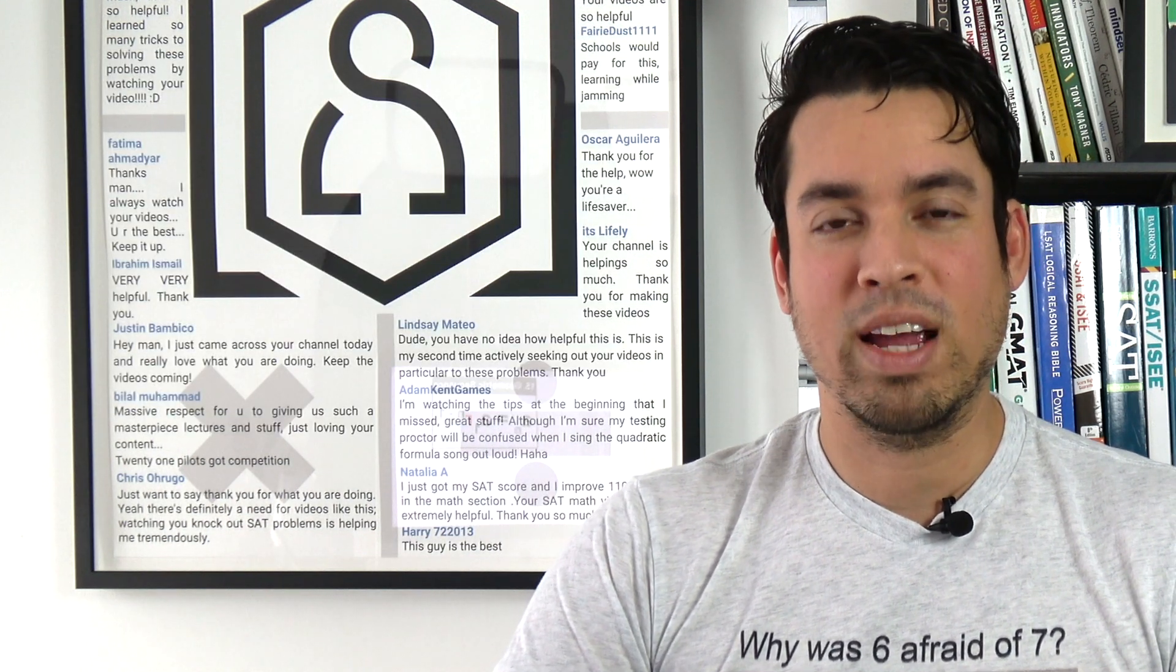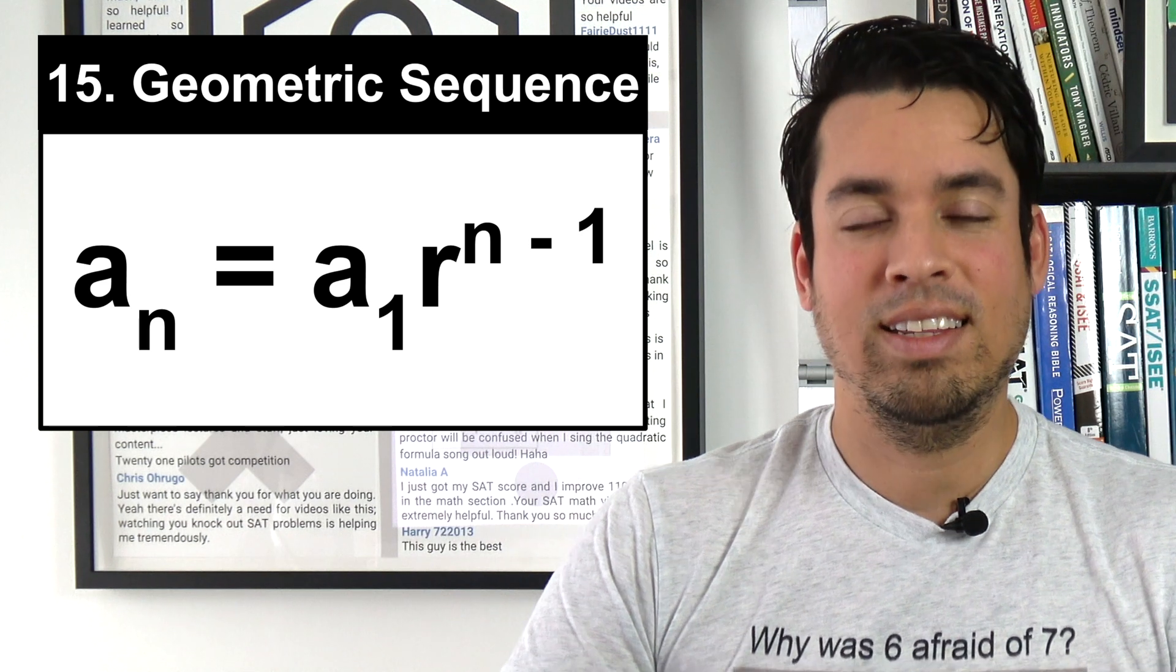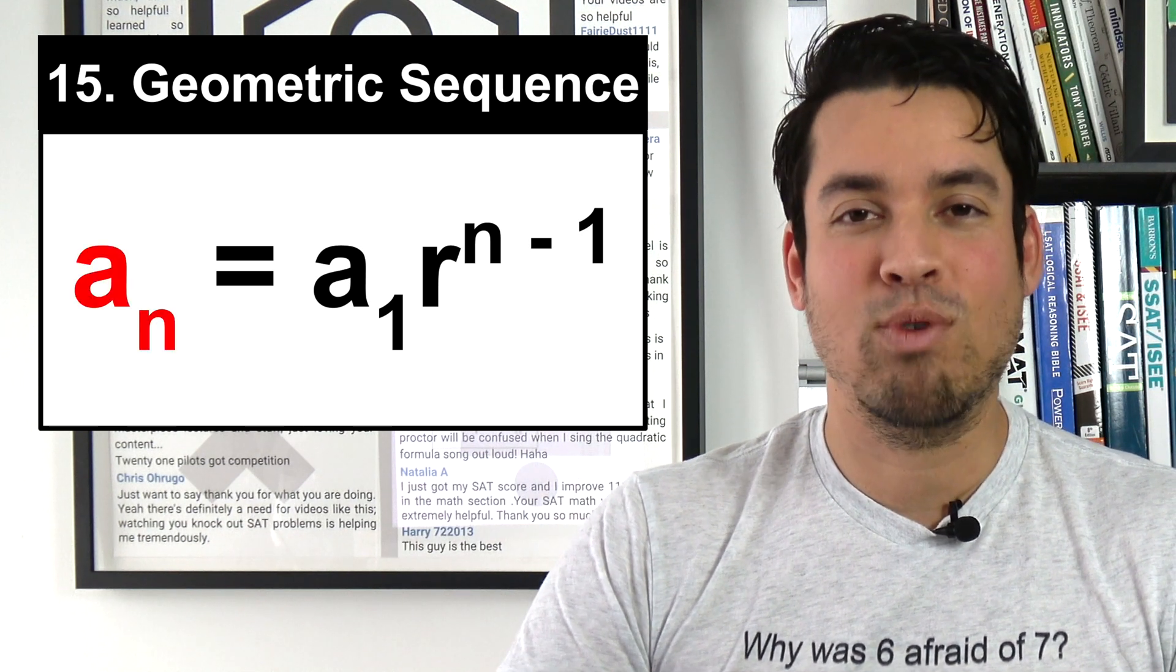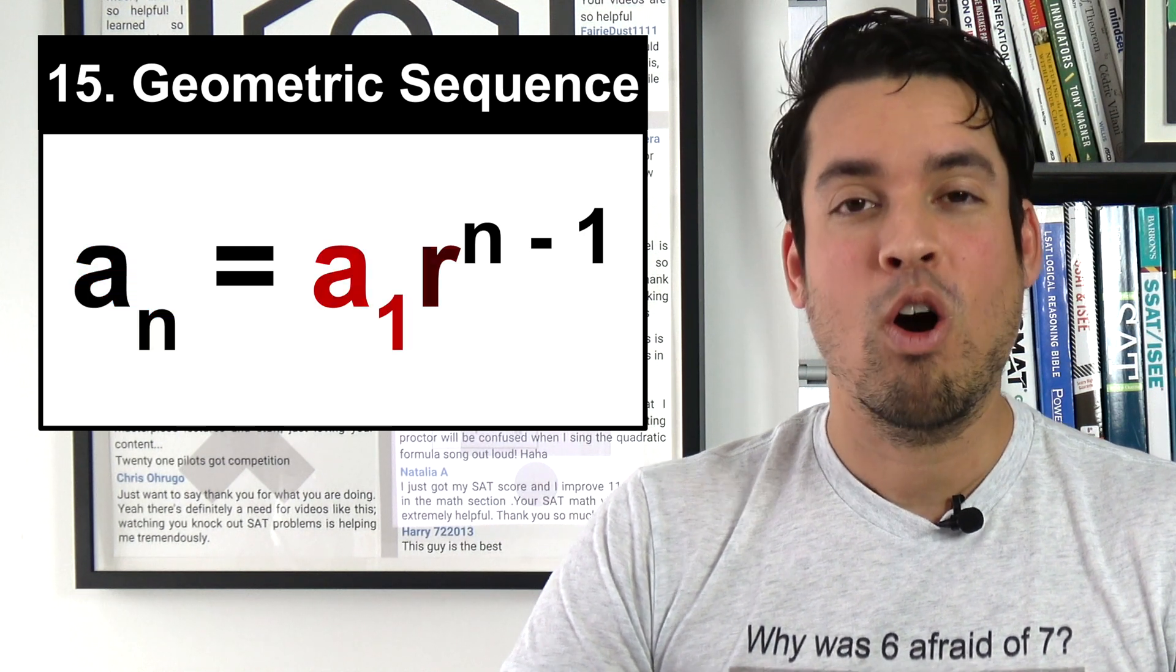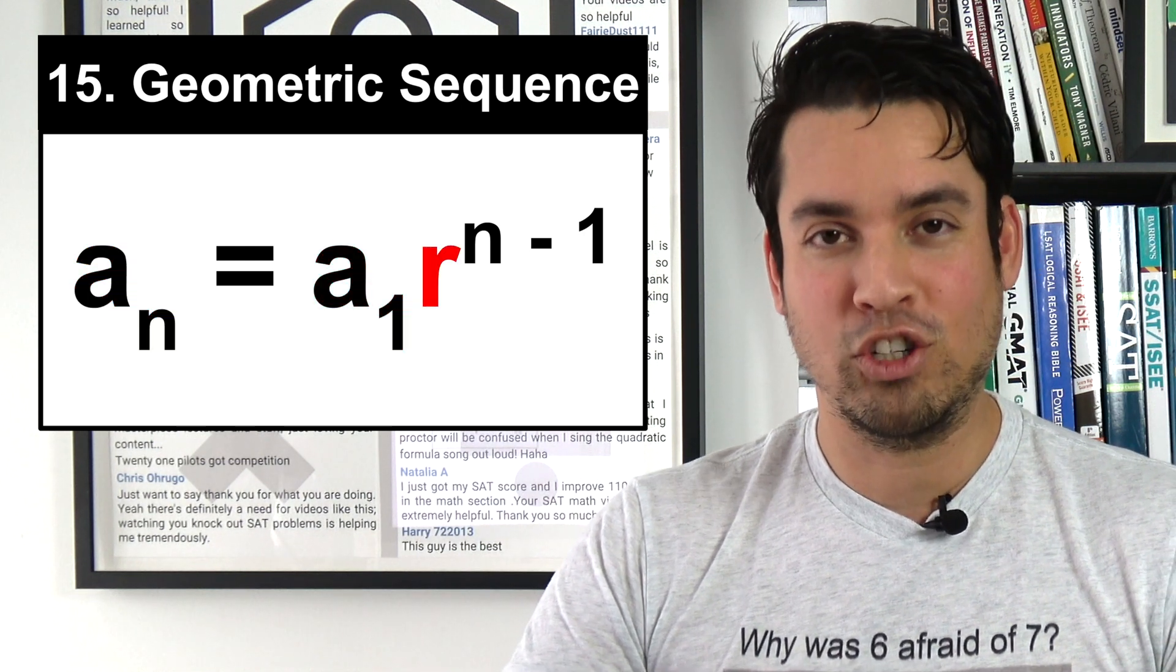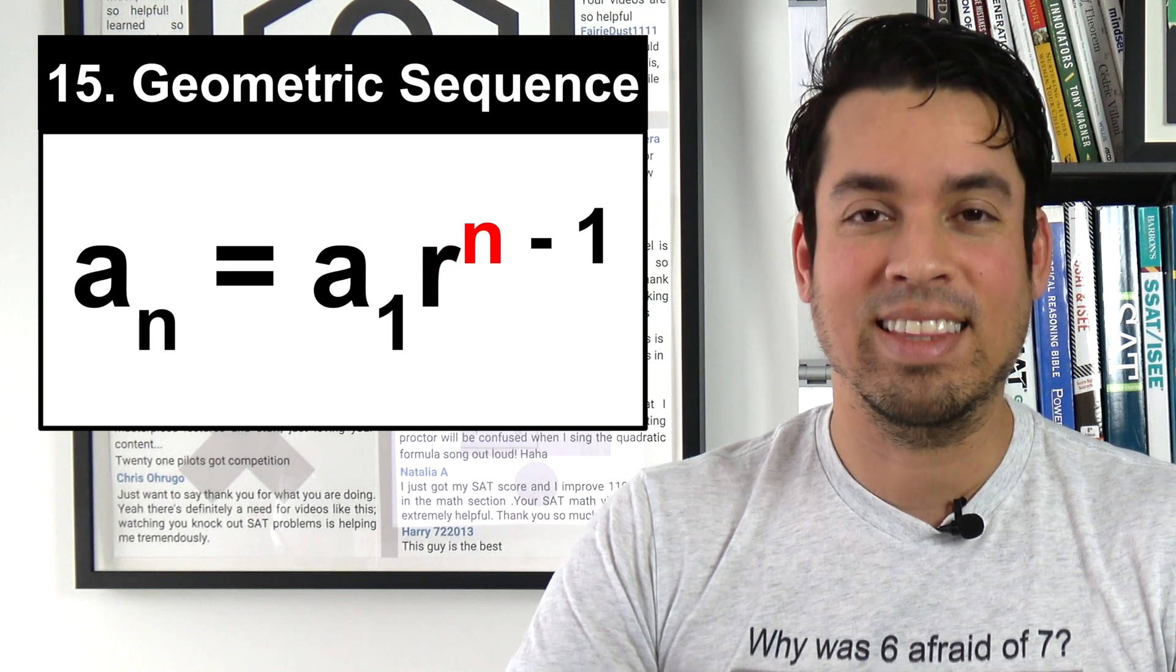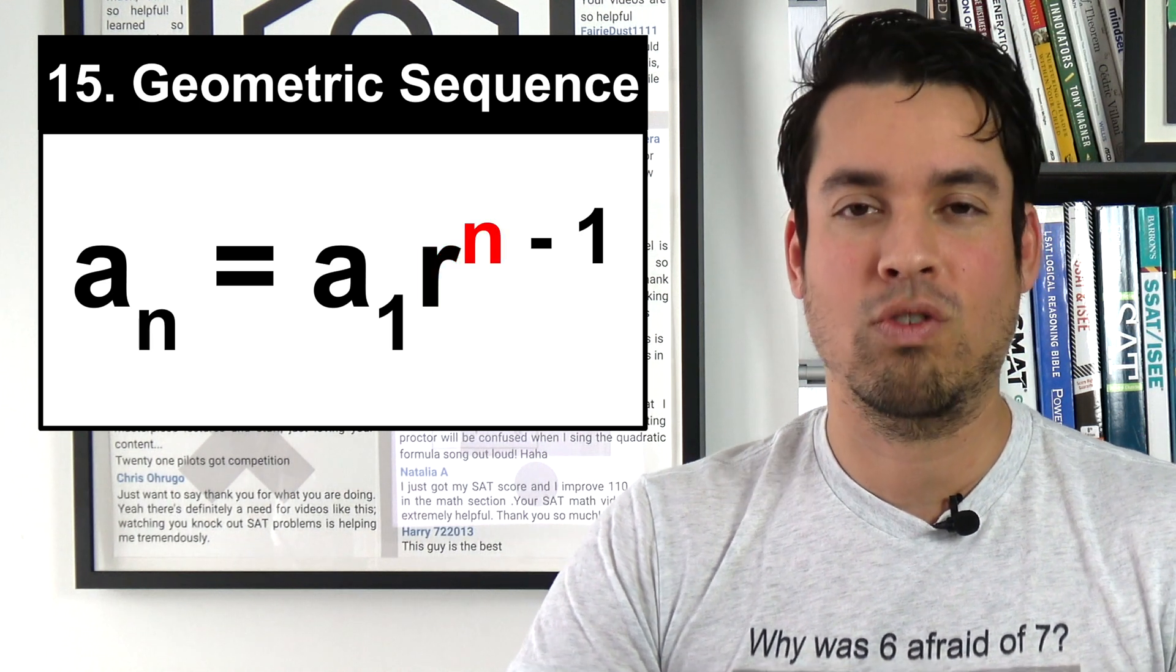Next we have the formula for a geometric sequence. In this formula, aₙ again represents the nth term of the sequence, a₁ represents the first term, r represents the common ratio, and of course n represents the number of the term that you're trying to find.